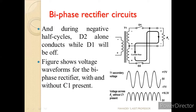This is the simple full wave rectifier using the biphase rectifier. During one phase one diode is on and the other is off. During the positive half cycle D1 is on, and during the negative half cycle D2 is on. This is the simple waveform without a reservoir capacitor connected across the load.